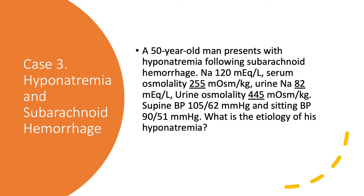Urine sodium — is it low? No, it's high. We have hyponatremia. Is it hypoosmolar? Yes — serum osmolality is low at 255. Urine sodium is high and urine osmolality is pretty high. Is this SIADH? With SIADH, the patient is euvolemic by definition. Is this patient euvolemic? No. Supine blood pressure is pretty low, and when the patient stood up it dropped even lower to 90/51. This patient seems to be dehydrated. Normally when we give a problem with hyponatremia, we don't give blood pressure measurements — so this means something.